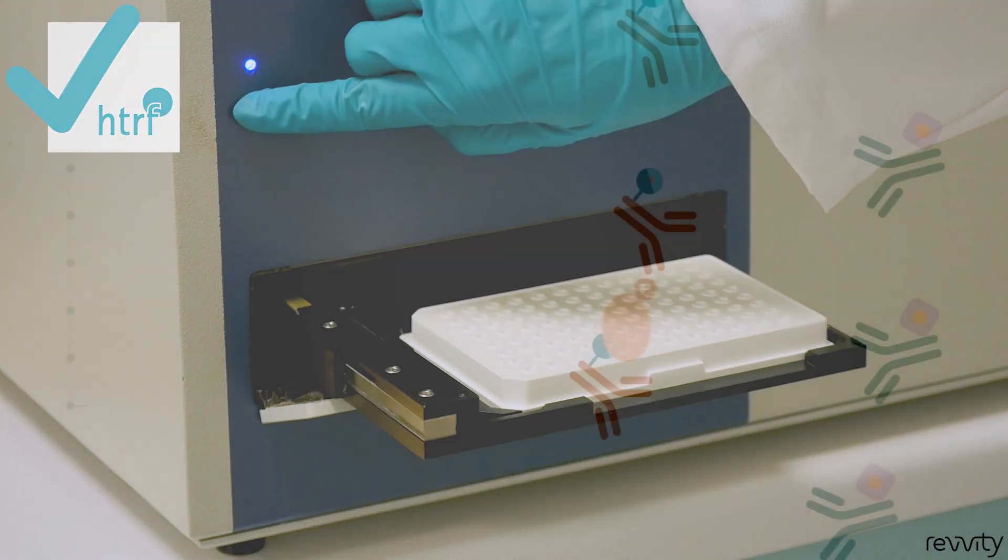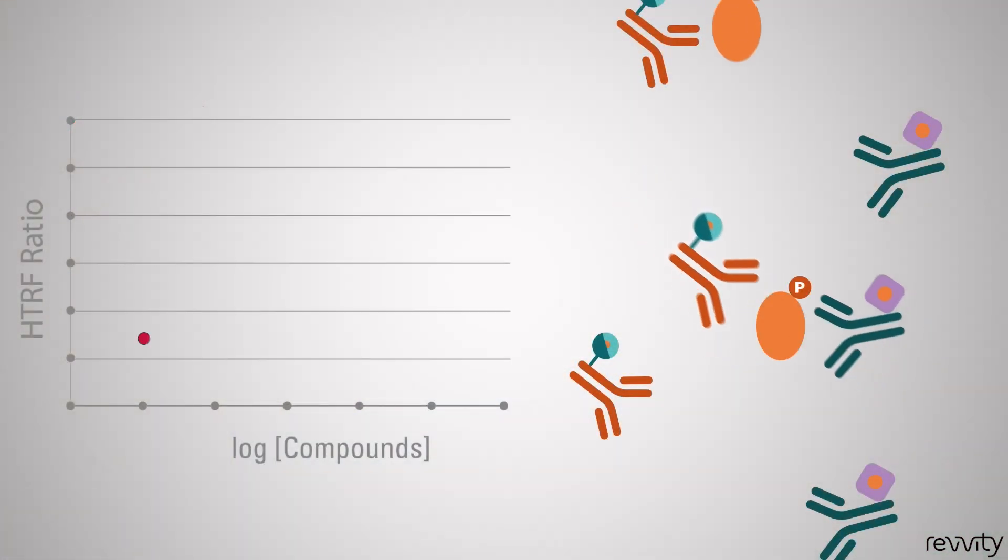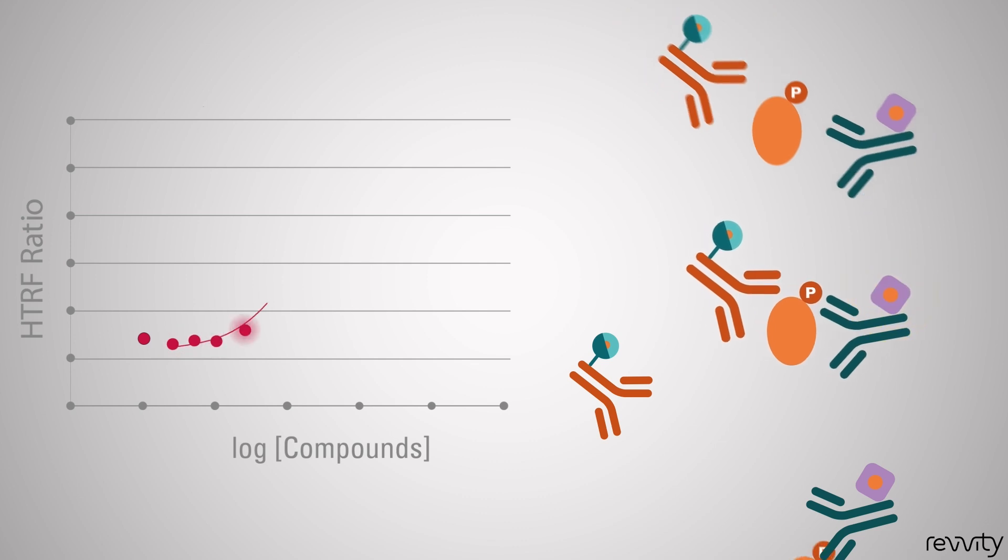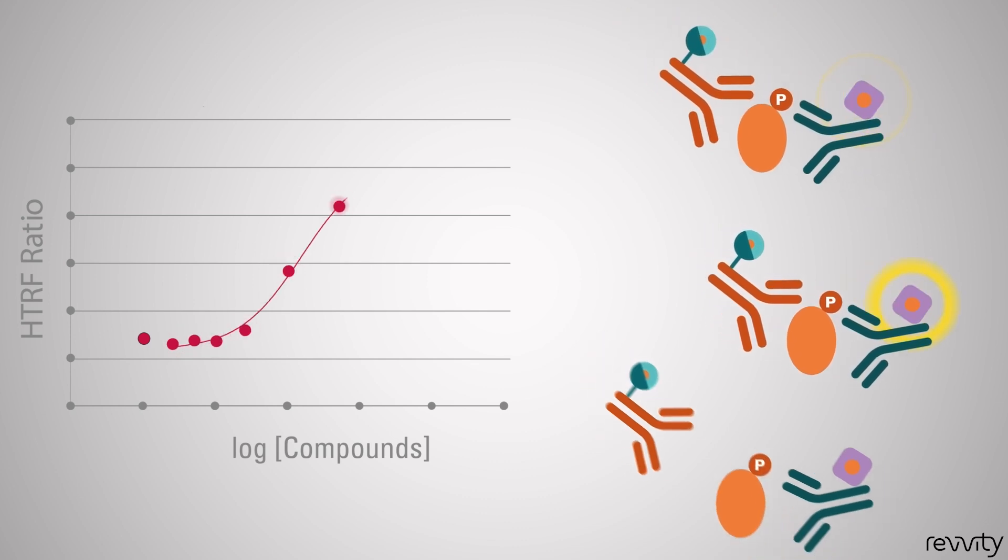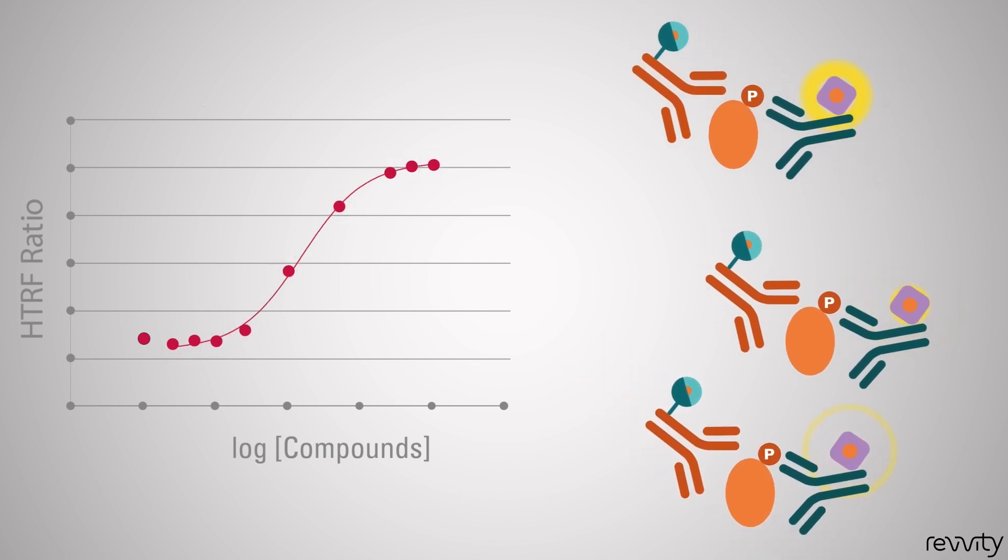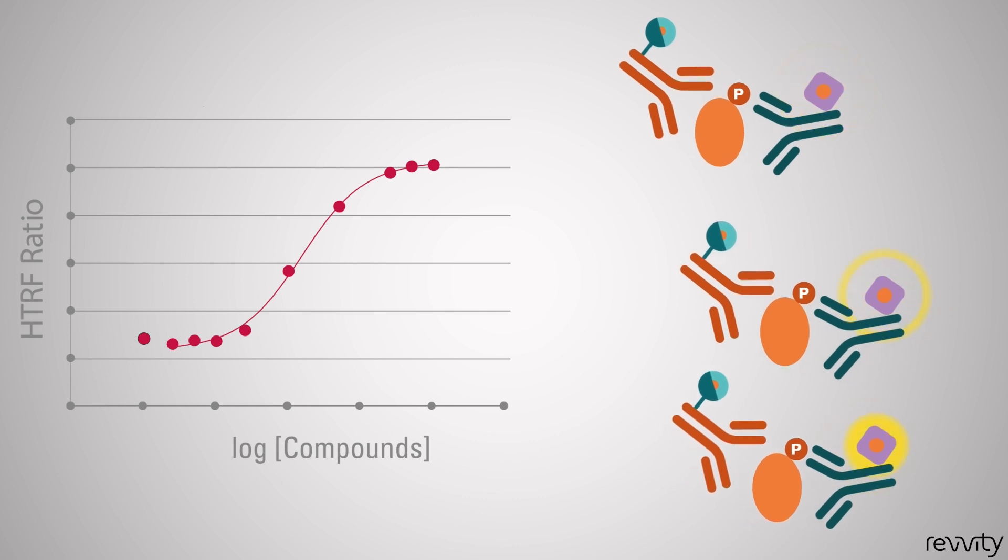You can make dose-response curves of your activator. Plot ERK phosphorylation in regard to compound concentration starting from basal level on the left and increasing with pathway activation until plateau.